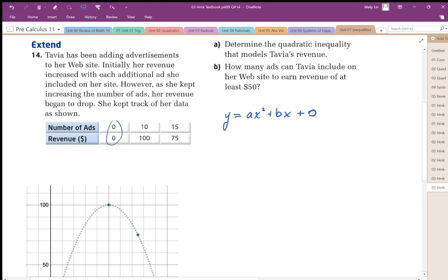So now I need to just come up with two equations to solve for A and B. So I'm going to use that point to come up with my first equation. So y equals 100, A times 10 squared plus B times 10. Then, simplifying that, I get 100 equals 100A plus 10B.